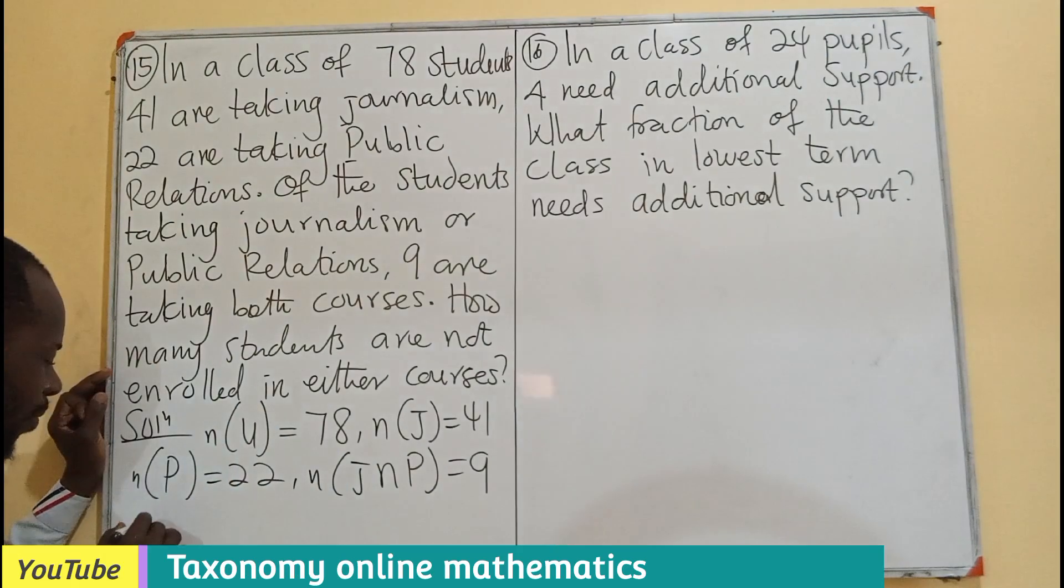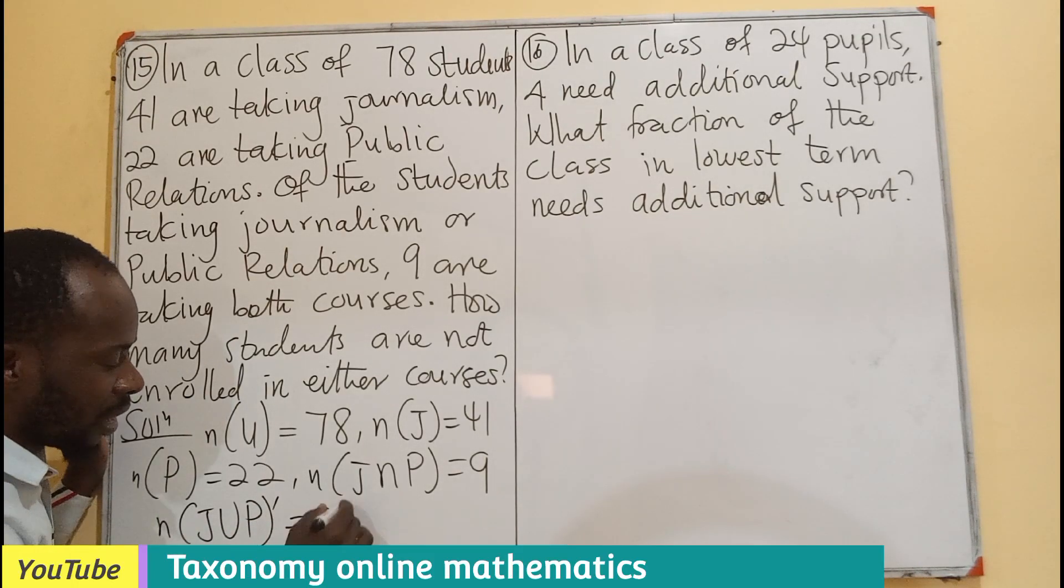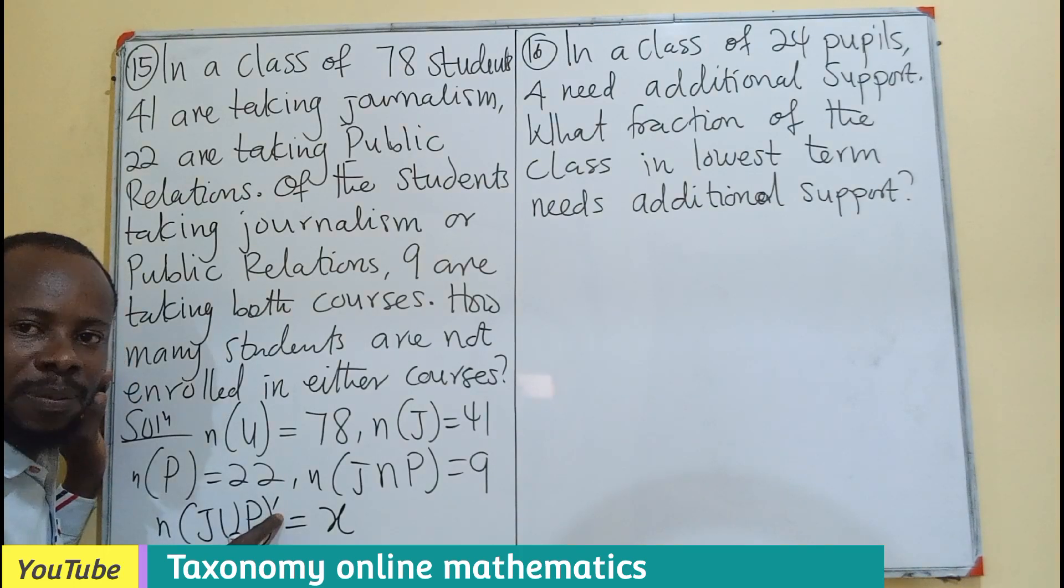Then we are looking for the complement. So number of journalism union public relations is equals to X. That is the complement, the complement of these people, but they are also in the class.